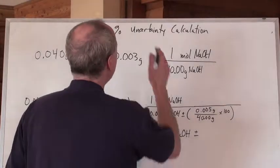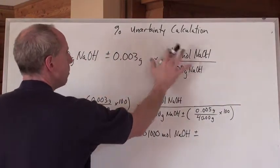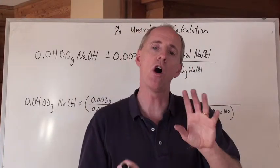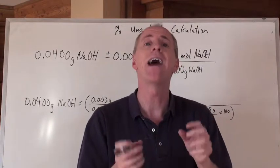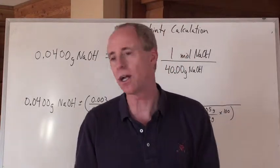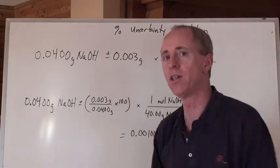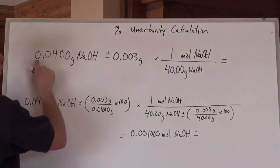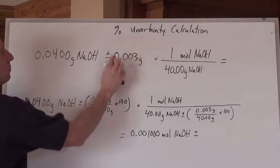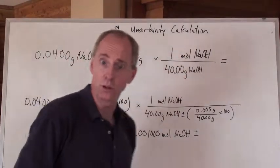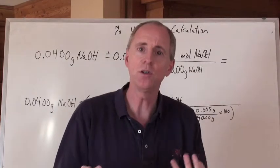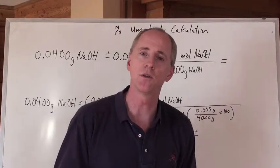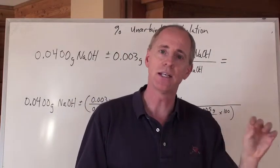So here's the deal. When you are multiplying numbers together or dividing numbers into each other, what you do is you convert all the absolute uncertainties into percents and you add those percents together. So now, let's do a calculation. We are taking 0.0400 grams of NaOH and we're going to try to find the moles by using the molar mass. We actually take the mass and we've got the molar mass of NaOH at 40.00 grams per mole. And now, we're just going to do a little bit of calculation that involves uncertainty.